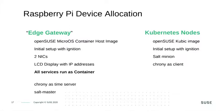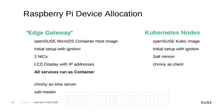The first Raspberry Pi is our Edge Gateway. We will use the OpenSUSE MicroOS container host image for it, which will be personalized during the first boot with the help of ignition and combustion. It has two network interfaces — the internal and external one. The LCD display is connected to it and follows the IP addresses and status of the cluster. All services run as containers on this node. Chrony is used as time server — if the network is online, we synchronize the time via the network; otherwise we use the local external real-time clock. The salt master runs on this node so that we can orchestrate everything.